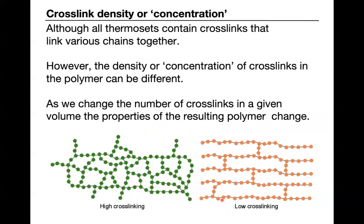In this lab we'll be making thermoset polymers. All thermosets have chains linked together, but the density of cross-linking points can vary. Changing the density or concentration of cross-links changes the properties of the polymer material. On the left we see a structure with relatively more cross-linkers per unit volume; on the right, fewer cross-linkers per unit volume. These two would have different properties, and that's one of the things we'll be exploring.